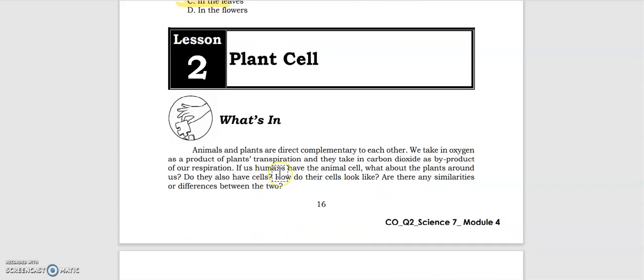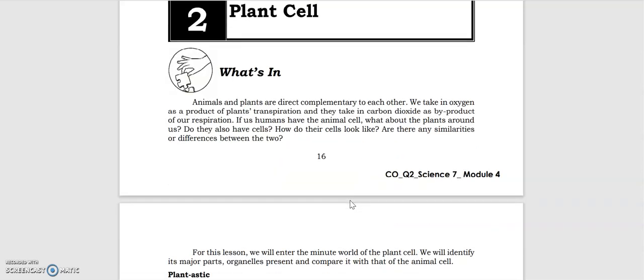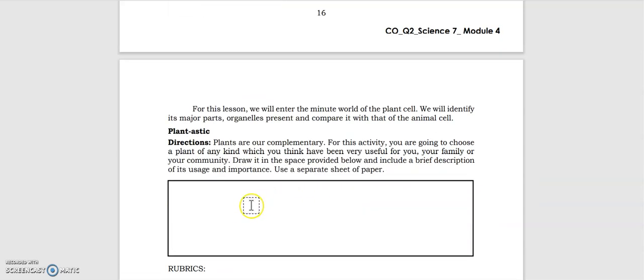Animals and plants are direct complementary to each other. We take in oxygen as a product of plants' transpiration, and they take in carbon dioxide as a byproduct of our respiration. If us humans have the animal cell, what about the plants around us? Do they also have cells? How do their cells look like? Are there many similarities or differences between the two?